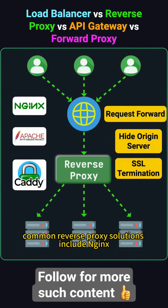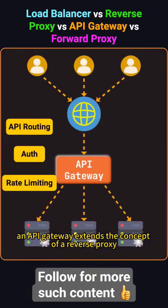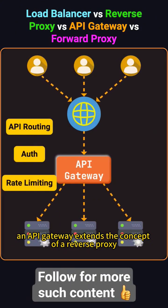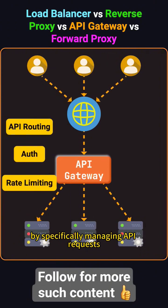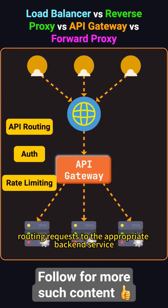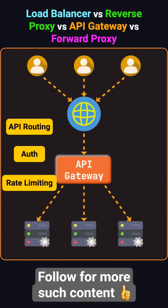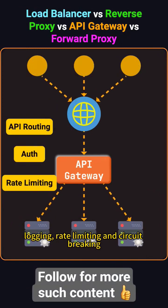Common reverse proxy solutions include NGINX, Apache HTTP server, and Caddy. An API gateway extends the concept of a reverse proxy by specifically managing API requests. It serves as the main entry point for all API traffic, routing requests to the appropriate back-end service. Besides routing, the API gateway handles tasks like authentication, logging, rate limiting, and circuit breaking.